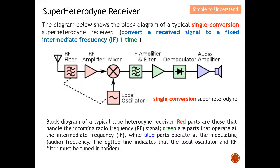The dotted line indicates that the local oscillator and RF filter must be tuned together — they must work hand in hand in order for us to receive the modulating signal.